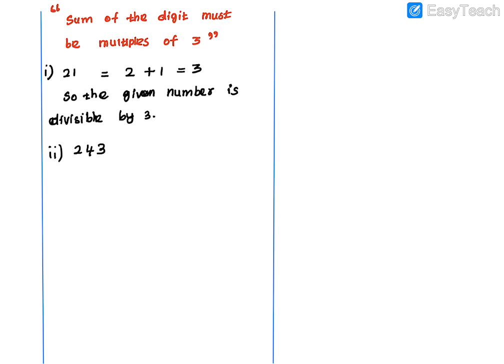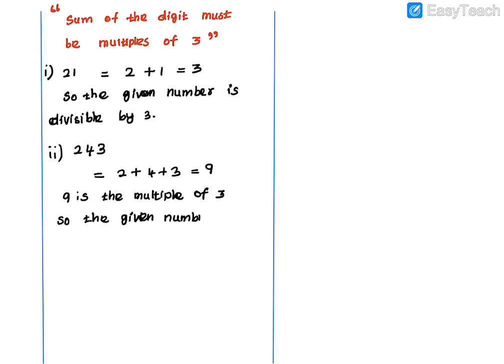Next, let's check 243. There are three digits: 2 plus 4 plus 3. That gives us 4 plus 3 equals 7, and 7 plus 2 equals 9. Since 9 is a multiple of 3, the given number 243 is completely divisible by 3.